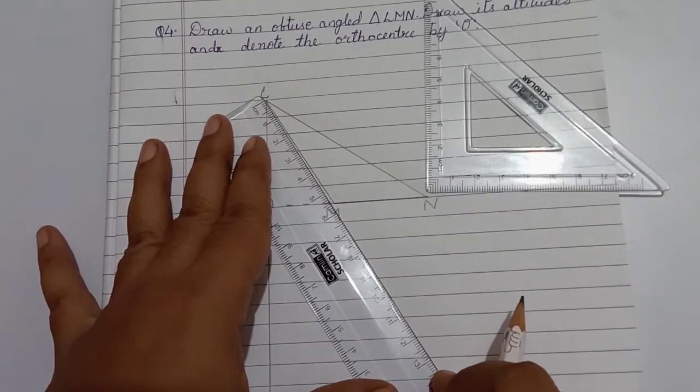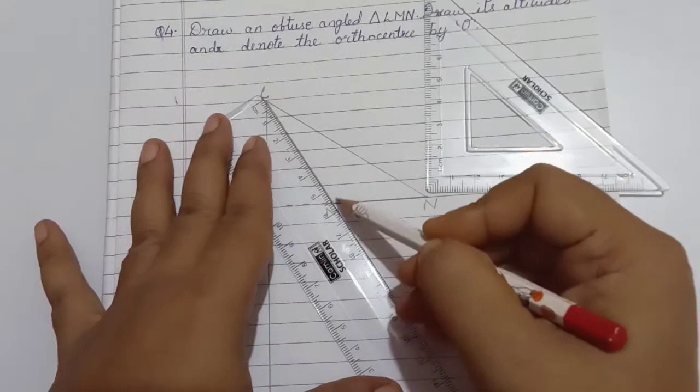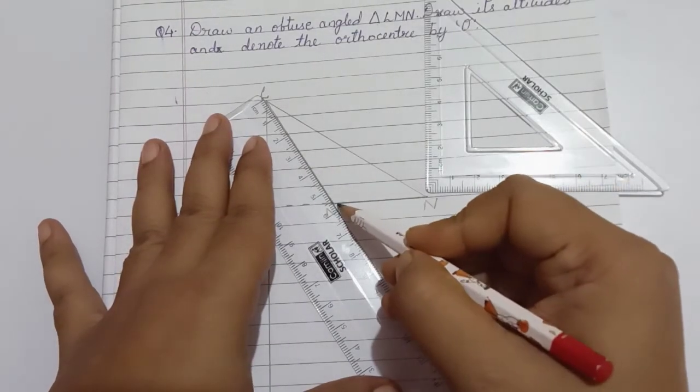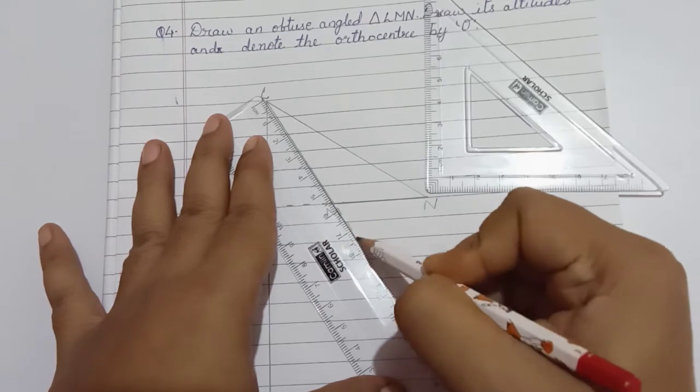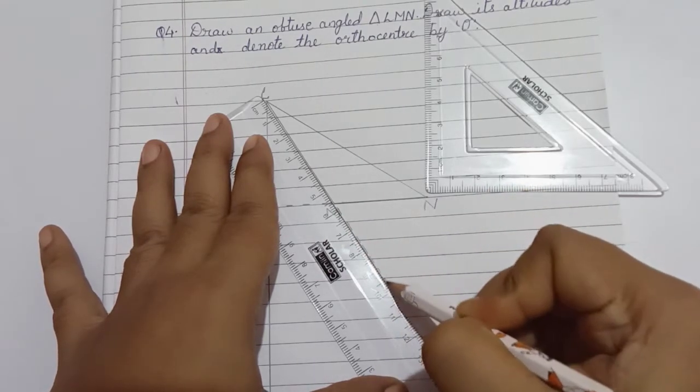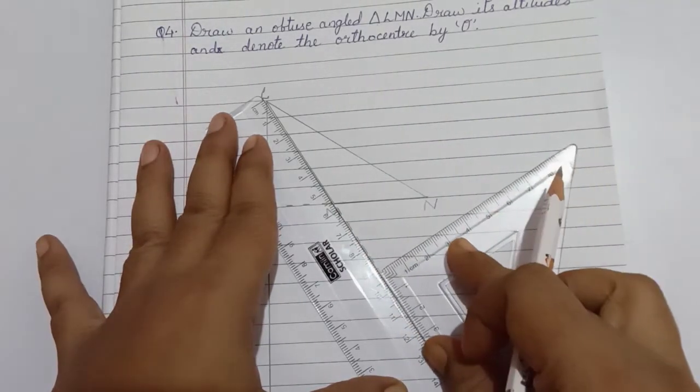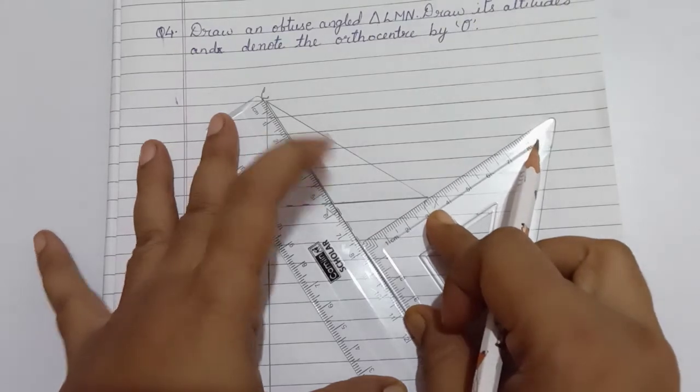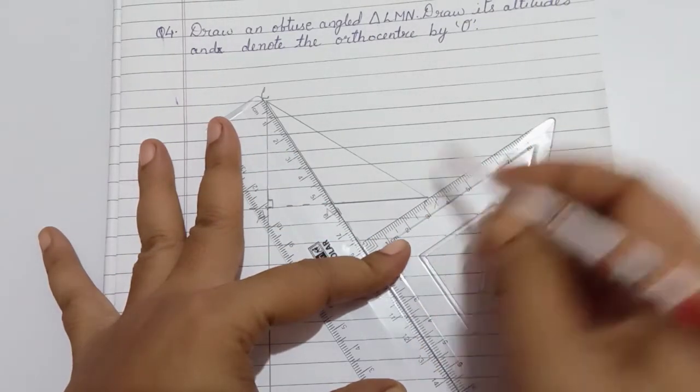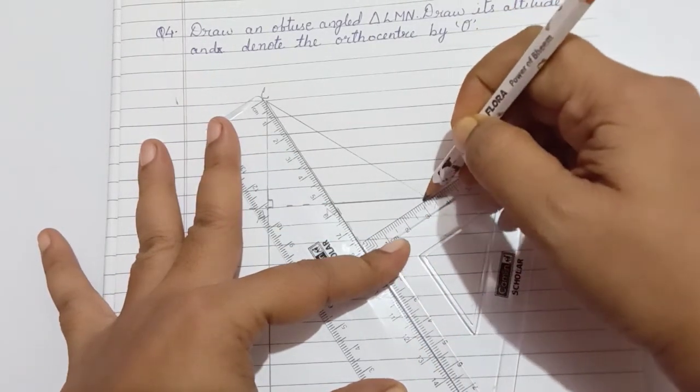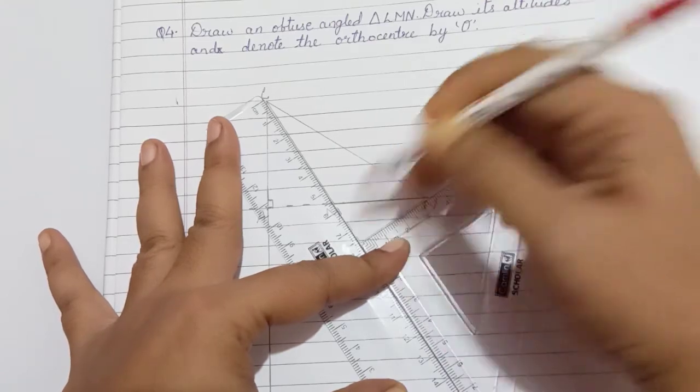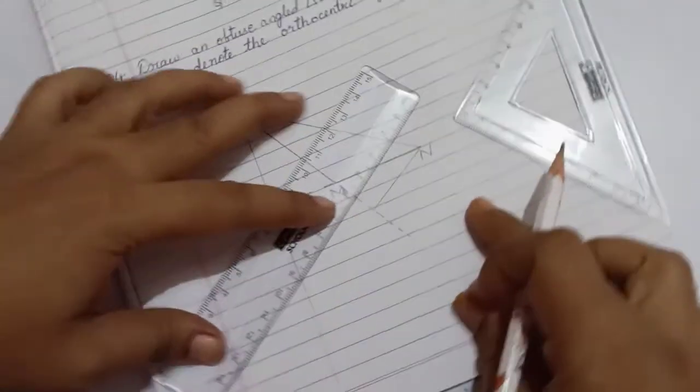Extend the line segment MN with dotted lines. Slide the set square till point N, drop the altitude, extend it below.